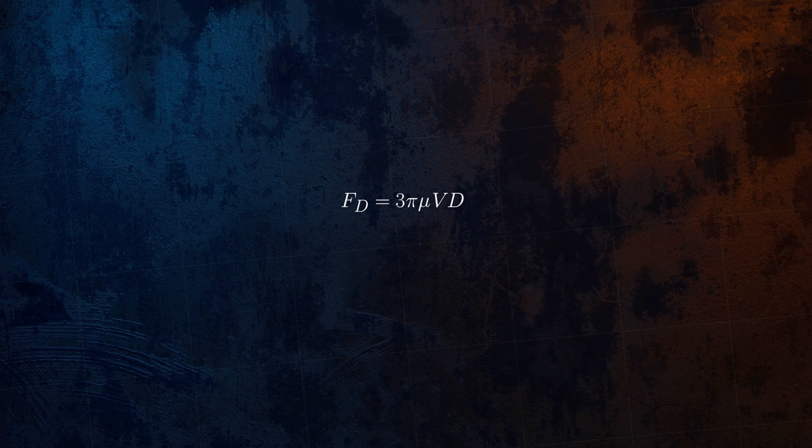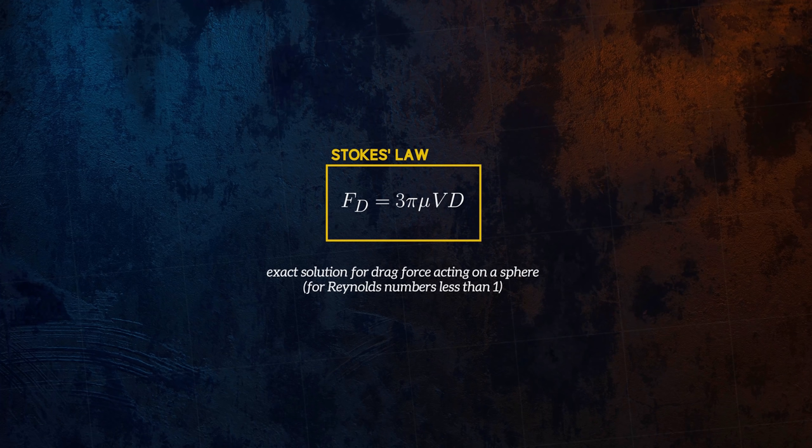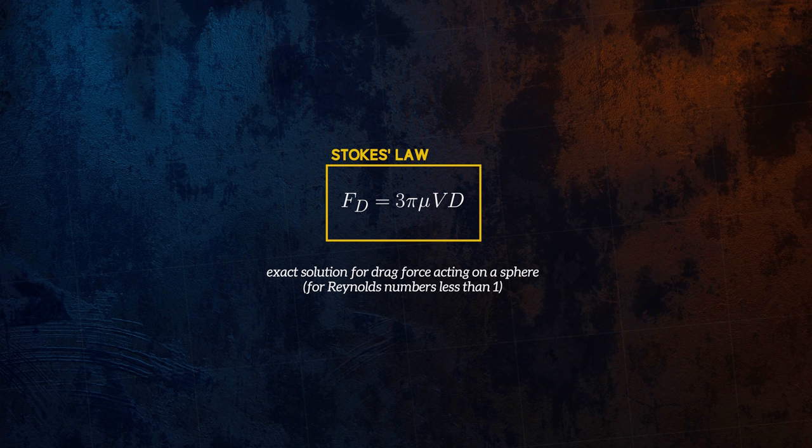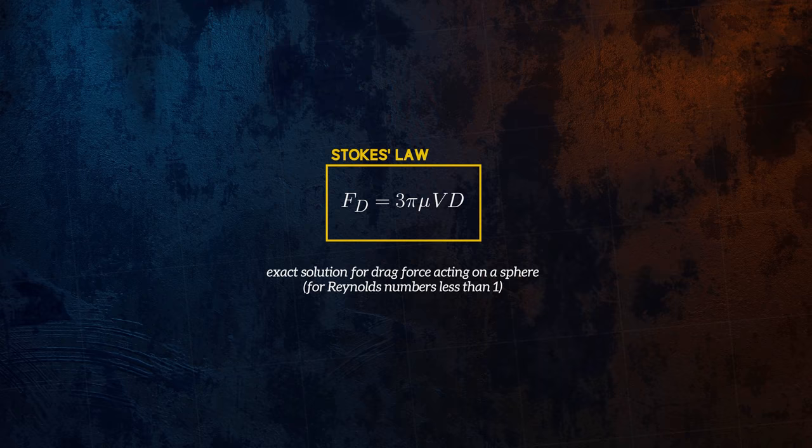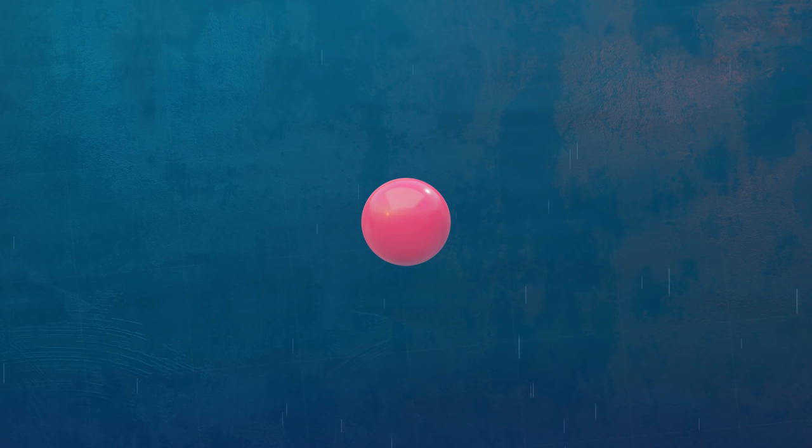This is called Stokes' Law, and it is an exact solution for the drag force acting on a sphere for Reynolds numbers less than 1. It's one of few cases where we have an analytical solution for calculating the drag force, and it has some very useful applications. We can use it to easily calculate the terminal velocity of a sphere falling in a fluid, so long as Reynolds number is low enough.